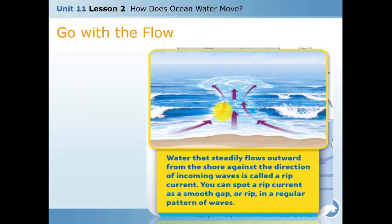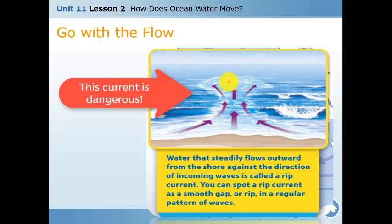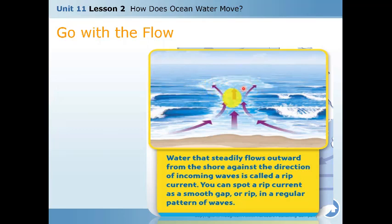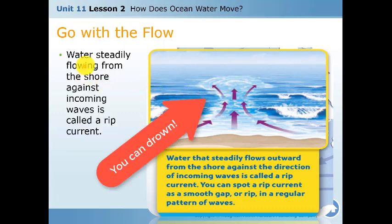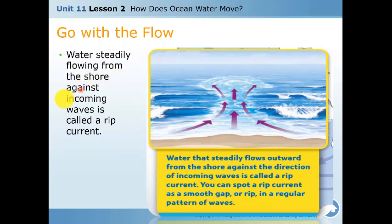Rip currents are really dangerous. In some cases, according to the shoreline, the floor in that area is deep — be careful there. Water that flows steadily away from the shore against the common wave direction is called a rip current.